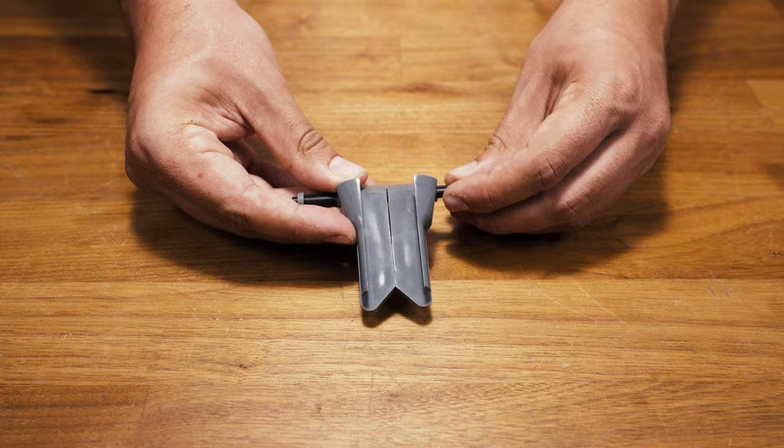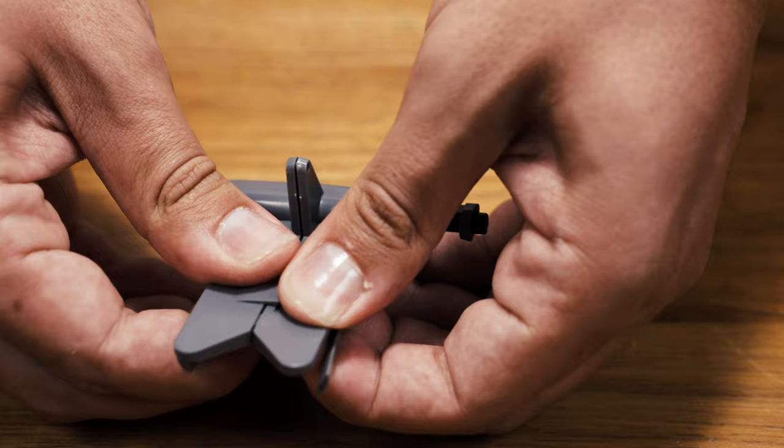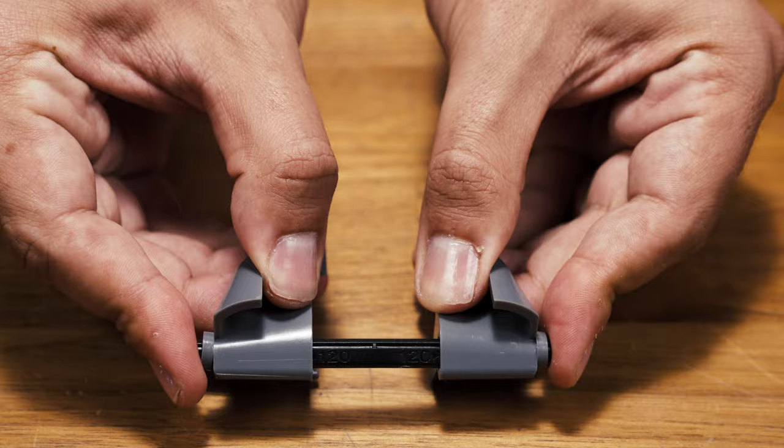To set the guide for 120 film, simply unlock the connection between the two sides underneath and spread the sides until they meet the rubber stoppers at the end of the mounting rod. Doing so will reveal the 120 text near the center of the rod.